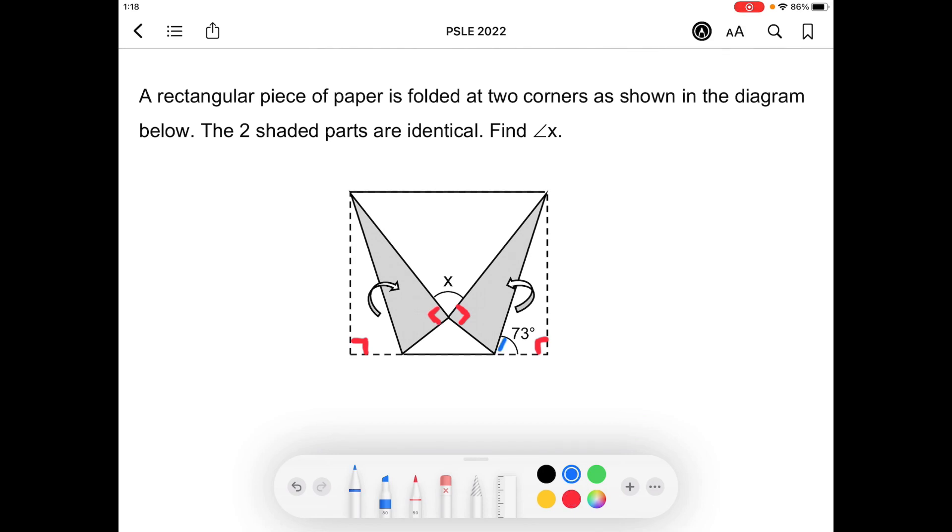Next is to identify where the duplication of this 73 degrees is. So if you were to fold it up, this part here is also 73 degrees. So that's where the duplication is, and with that we can find out this angle that I'm marking.